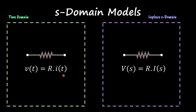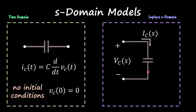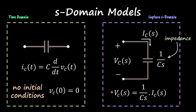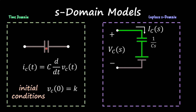Resistors are straightforward — they don't change much. In the time domain you have Ohm's law, and in the s-domain you also apply Ohm's law with the same R value. For a capacitor with no initial conditions, all you need to do is represent the voltage across and current through the capacitor in the s-domain, substituting C with the impedance 1/Cs. Then you can treat it as a normal resistive circuit and apply Ohm's law: voltage equals current times impedance.